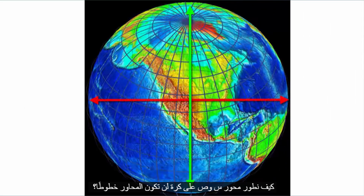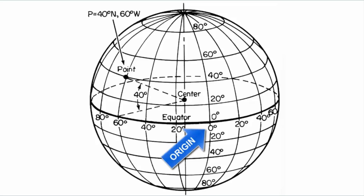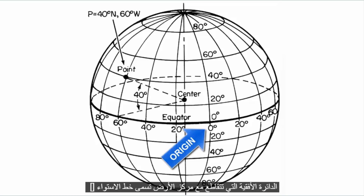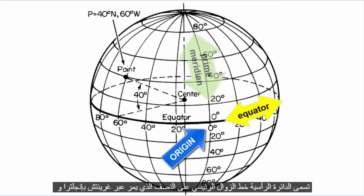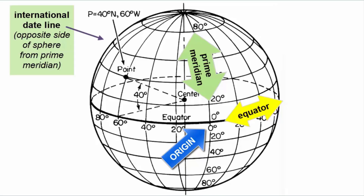How do we develop an x- and y-axis on a sphere? The axes won't be lines, but circles that wrap completely around Earth and intersect each other in two spots, as this image shows. The horizontal circle that cuts across the Earth's center is called the equator. The vertical circle is called the prime meridian on the half that runs through Greenwich, England, and the international dateline on the other half that runs through the center of the Pacific Ocean.